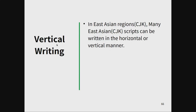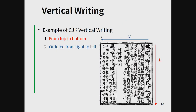Vertical writing: in East Asian regions, many East Asian scripts can be written horizontally or vertically. Japan uses this. An example of CJK vertical writing goes from top to bottom, with ordering from right to left — top to bottom and right to left.